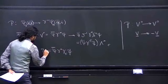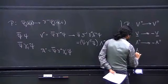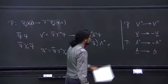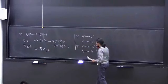But under parity, its behavior is different. Let's call this V-mu. Under parity, V-0 goes to V-0, but the three-component goes to minus of this. We can prove that using this relationship. And let's call this object A-mu. Under parity, the zeroth component behaves differently while the three components do not change. So this is what we call a pseudo-vector.